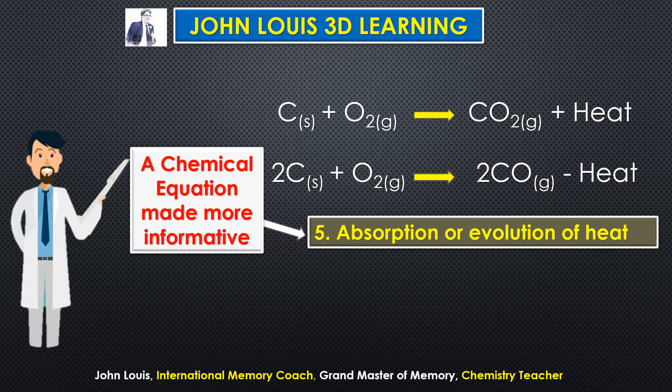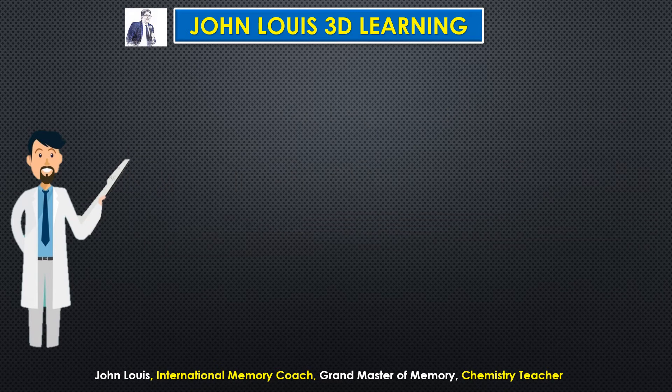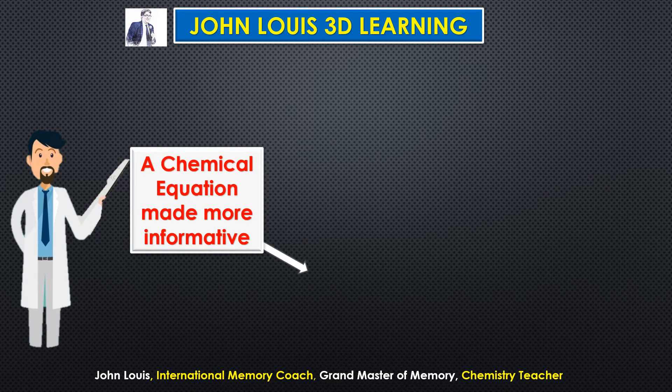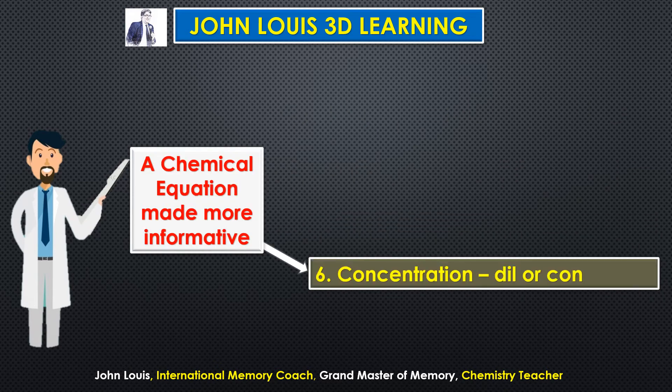Now consider: carbon plus oxygen gives carbon monoxide. For this reaction to take place, we have to supply heat — meaning heat is absorbed. That is why it is written as minus heat. So, plus heat in the product side means heat is evolved, and minus heat means heat is absorbed.